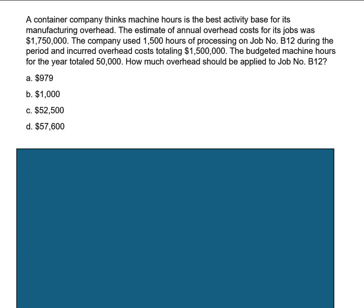A container company thinks machine hours is the best activity base for its manufacturing overhead. The estimate of annual overhead costs for its jobs was $1,750,000. The company used 1,500 hours of processing on job number B12 during the period and incurred overhead costs of $1,500,000. Budgeted machine hours for the year totaled 50,000. We're asked: how much overhead should be applied to job number B12?